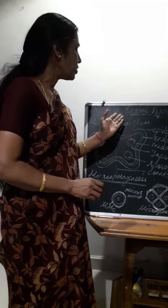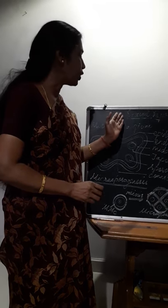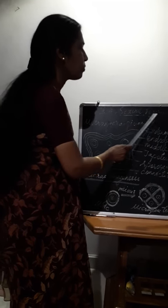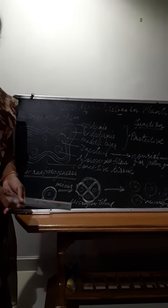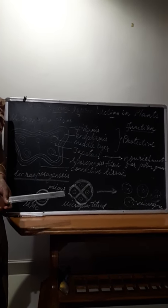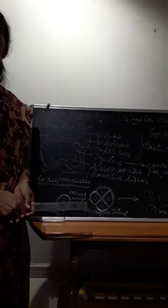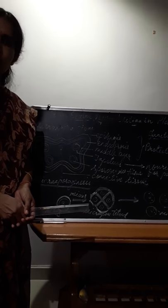Today we are going to discuss Chapter 2, Sexual Reproduction in Flowering Plants. What is the other name of flowering plants that you have already learnt? Other name of flowering plants is angiosperm.